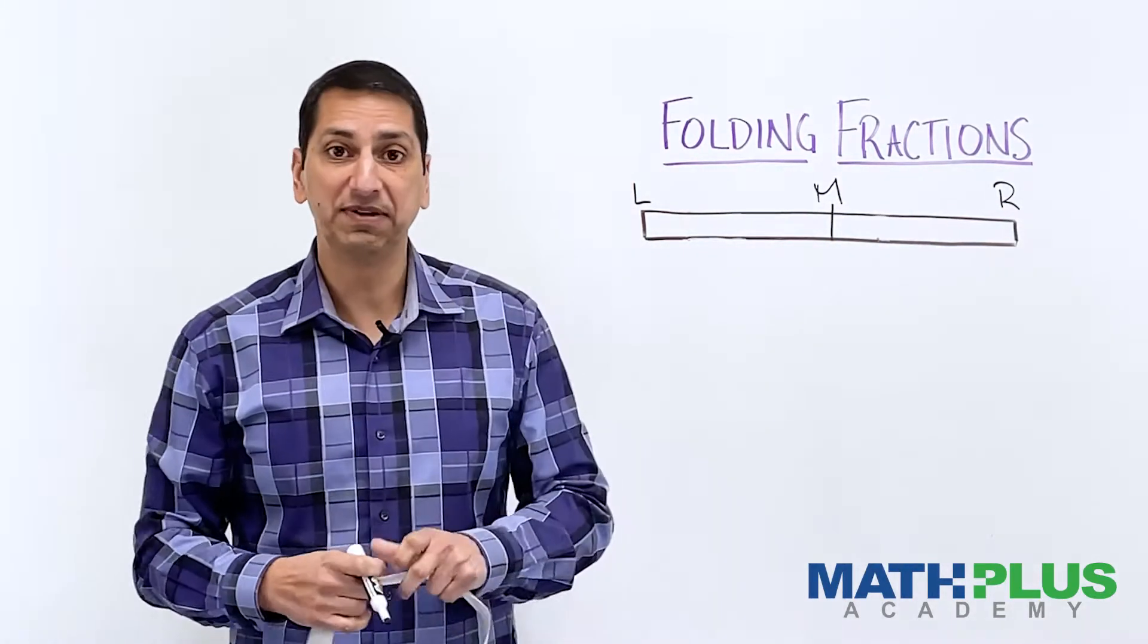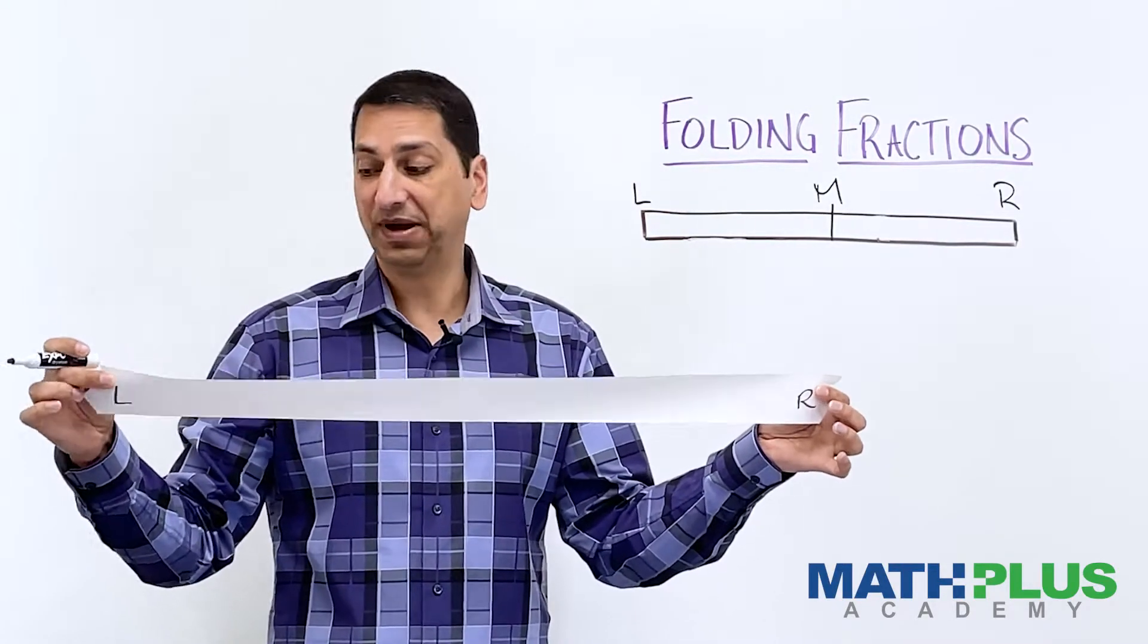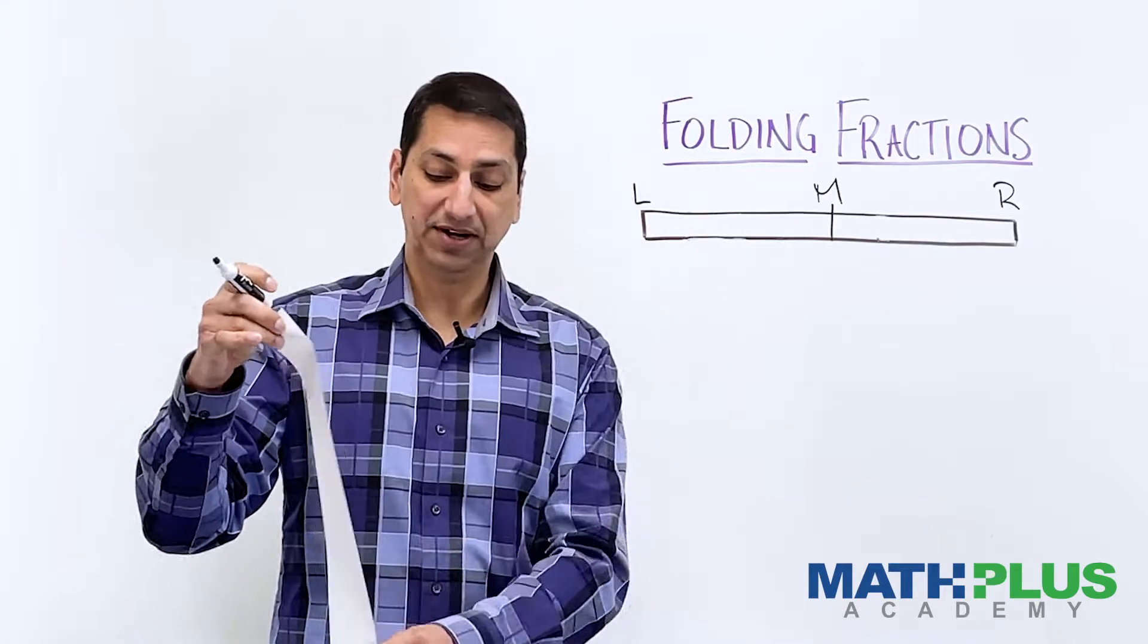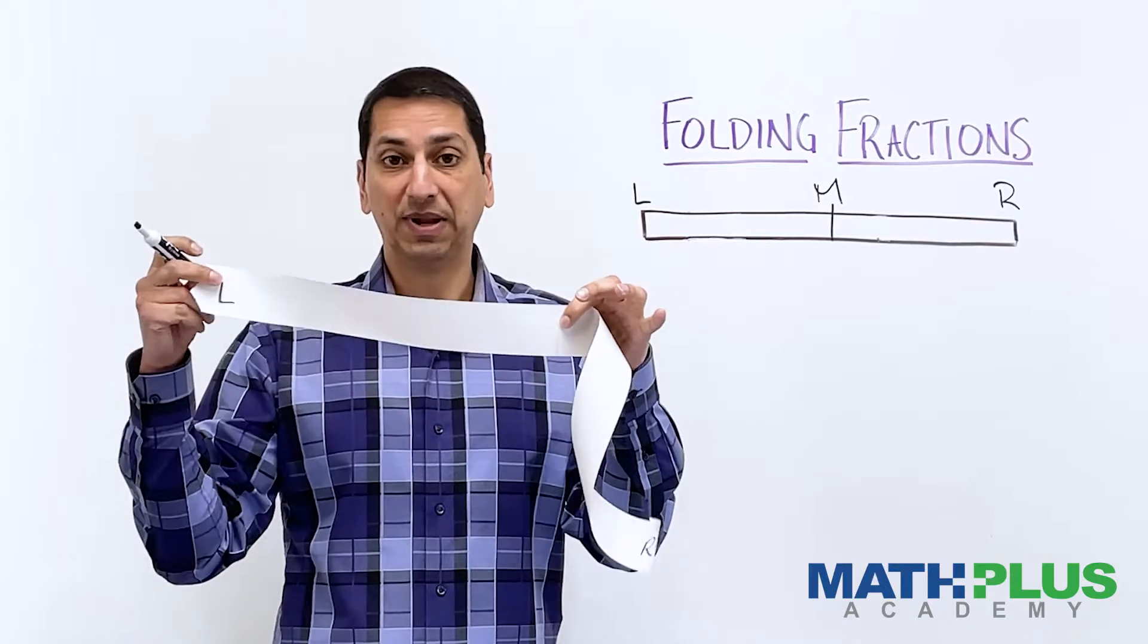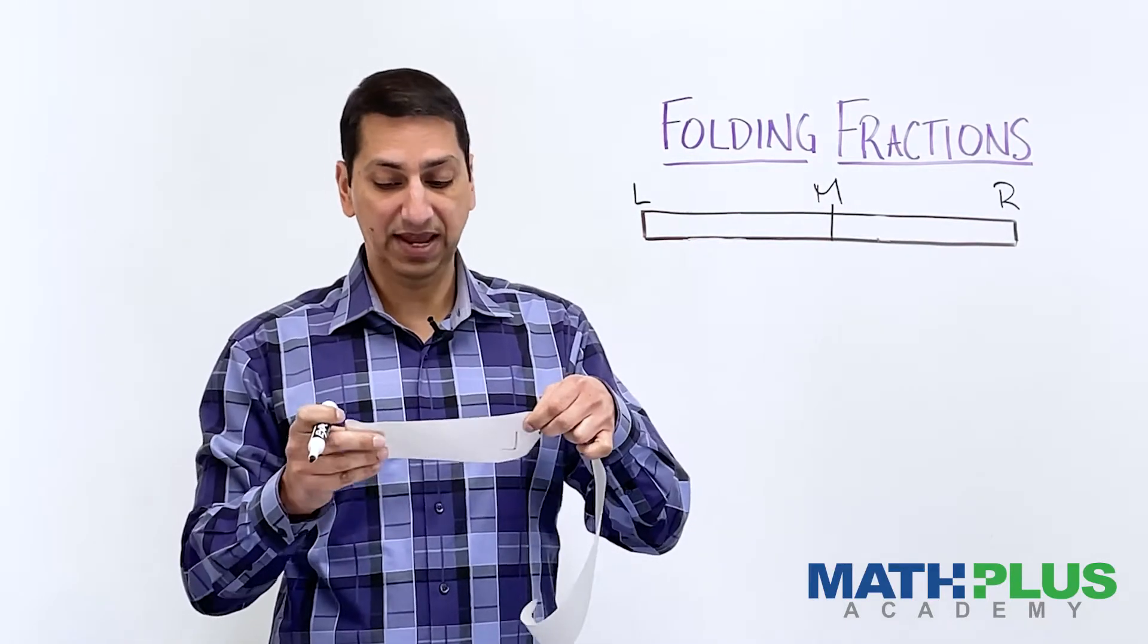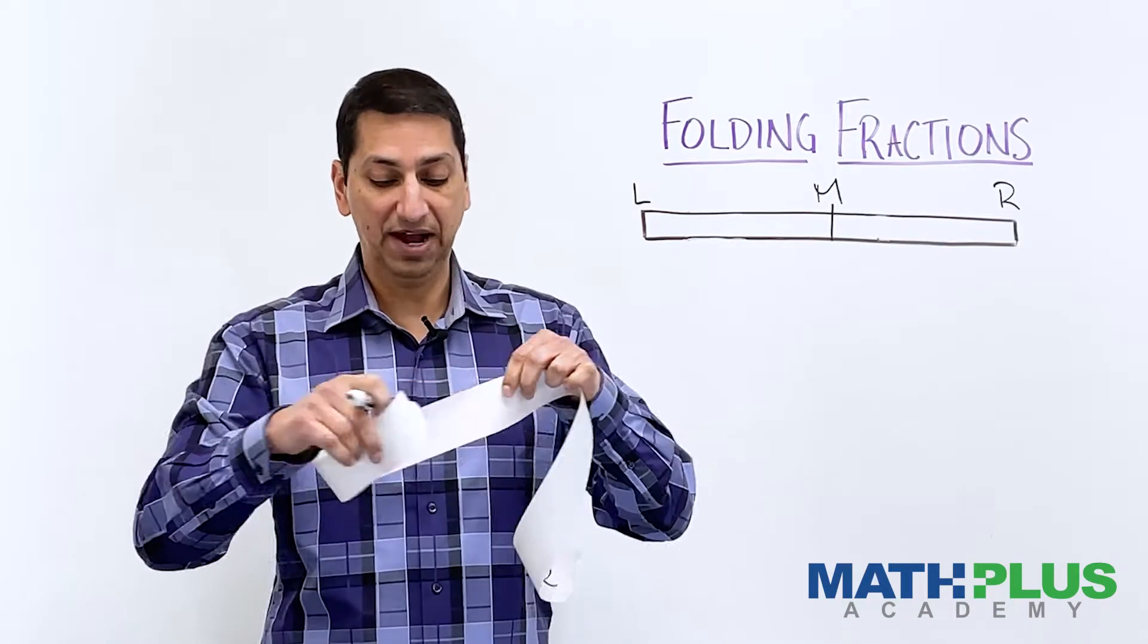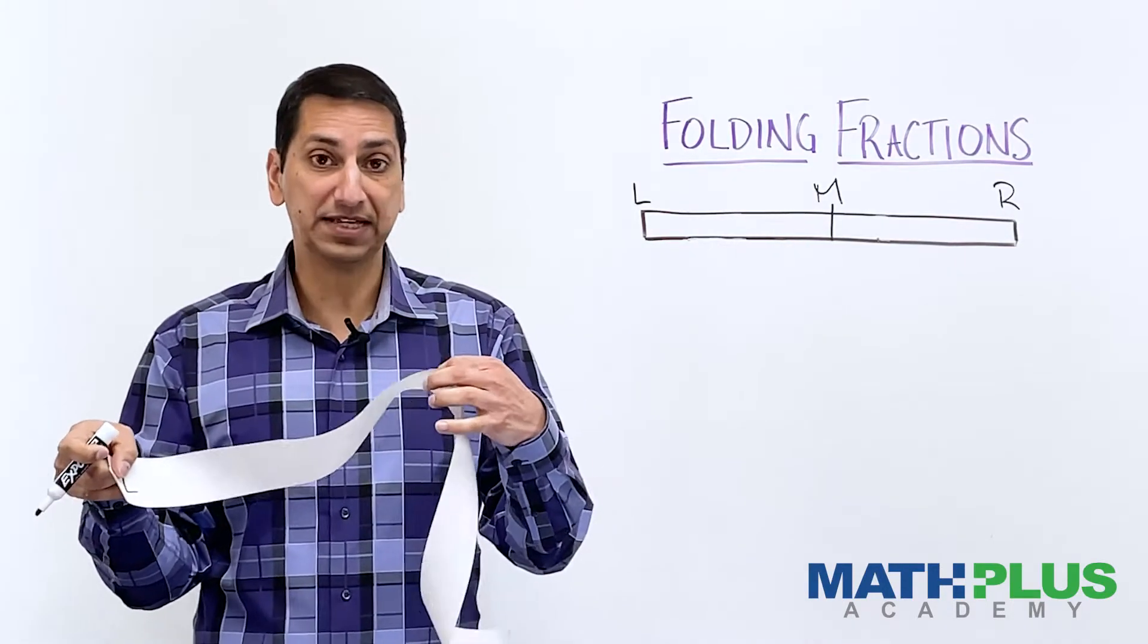And our rules are going to be very simple. If we want to make a new crease in this paper, we have to do it by either folding the left side or the right side to a crease that already exists. So right now, all I have is this one in the middle. I could fold the left edge over to the middle and make a new crease. And so some questions immediately arise. Where is that crease? What should I call it? Some things like that.